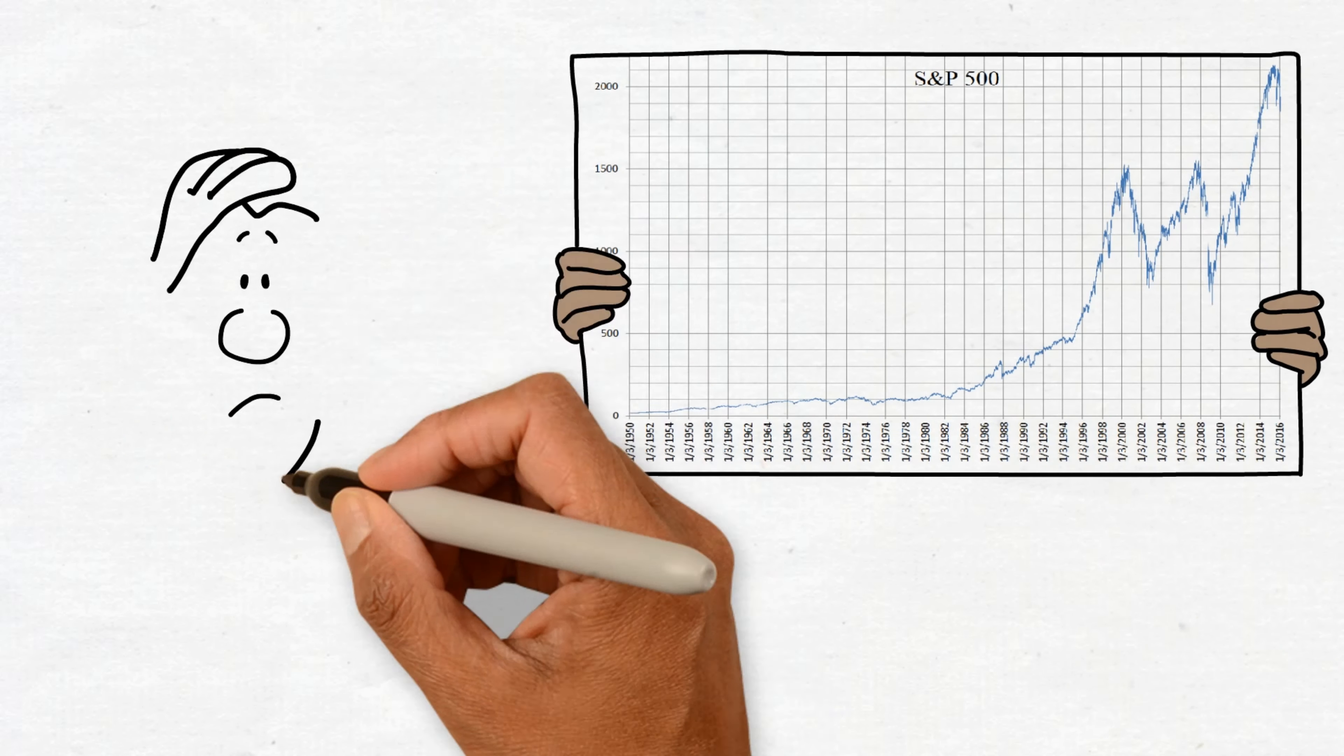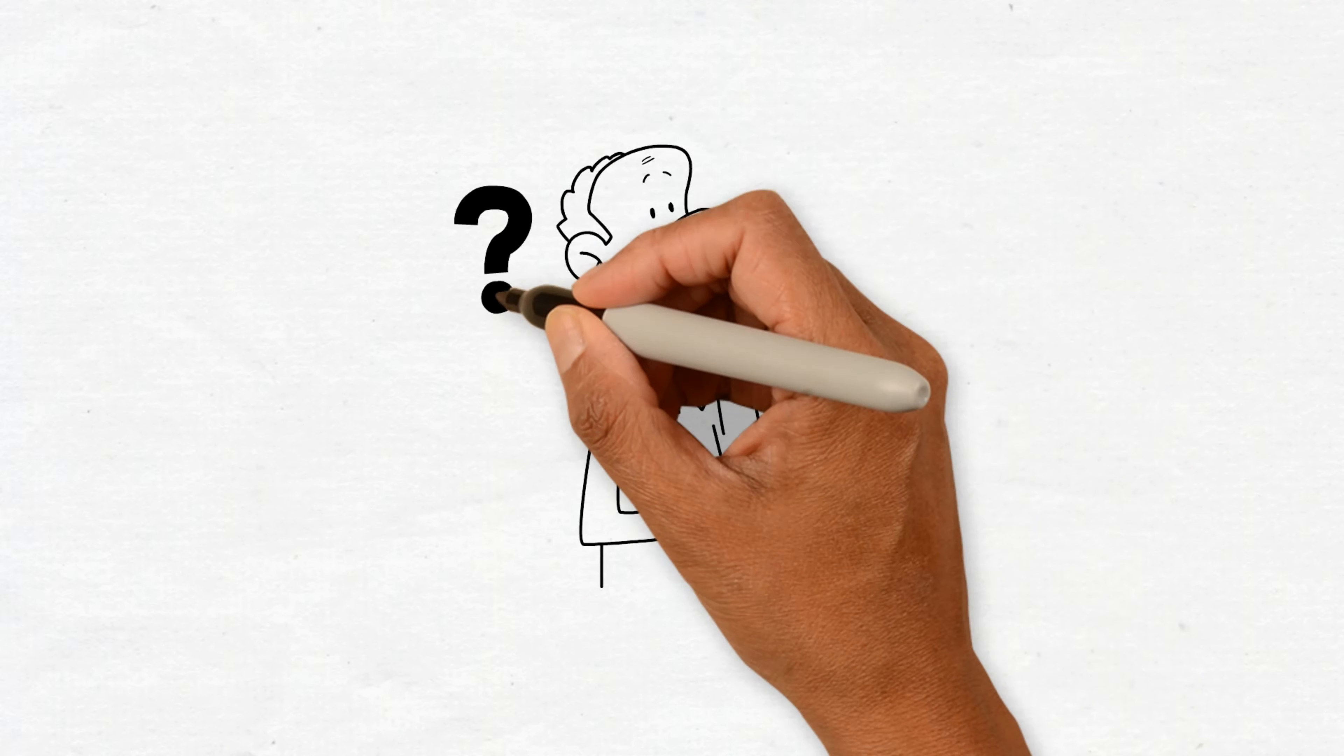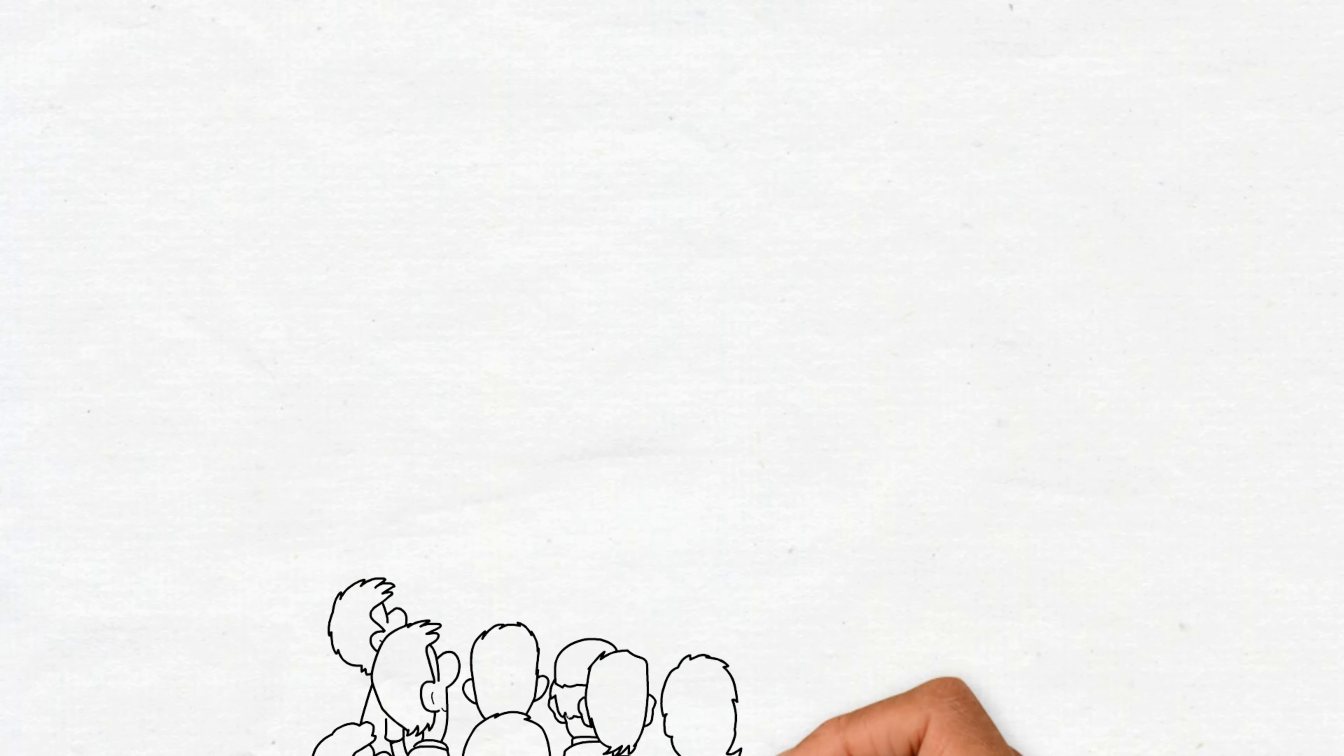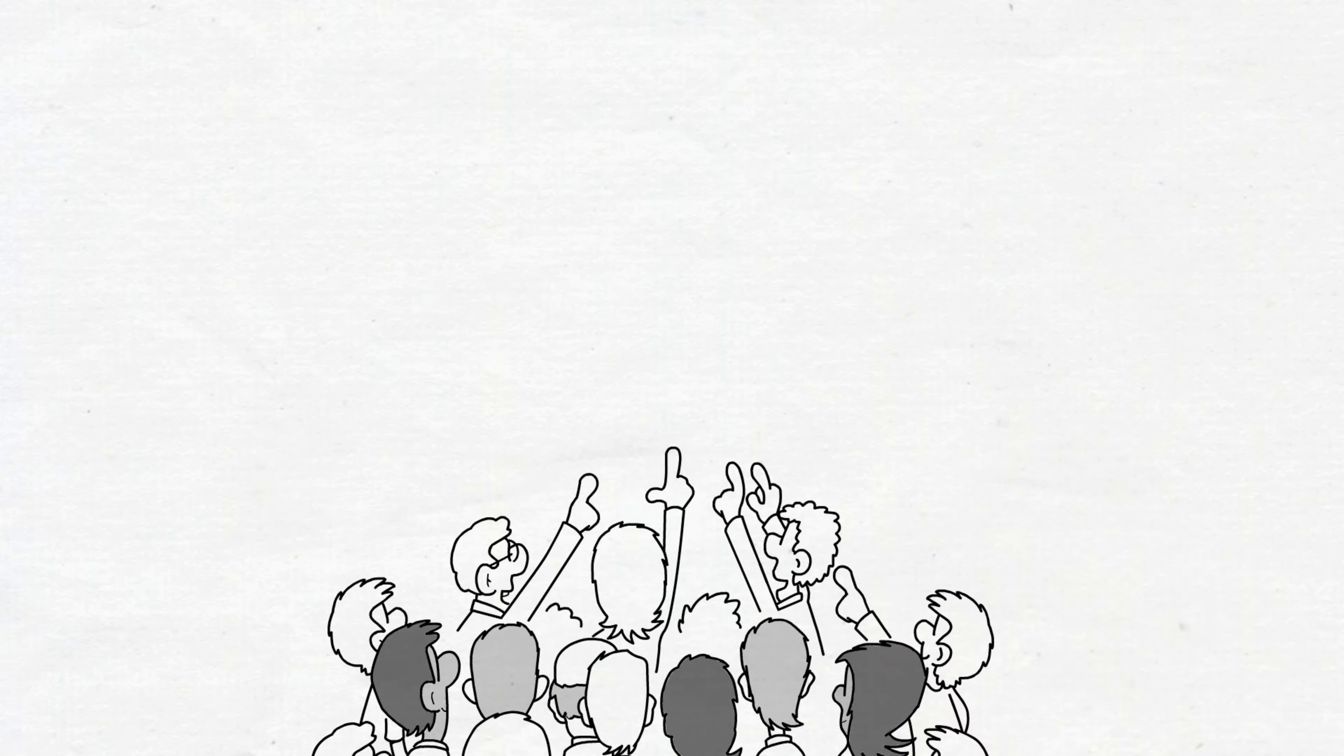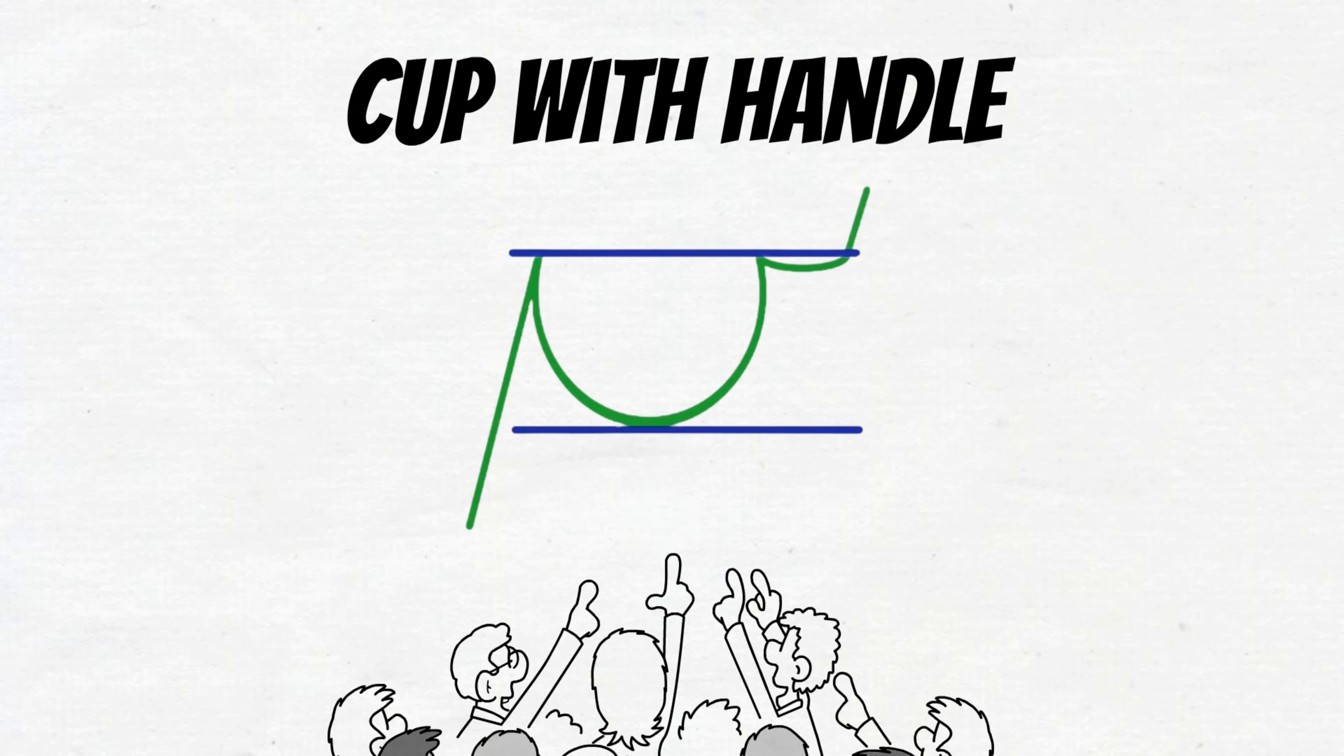Many investors fail to do this, and unless they're spectacularly lucky, they lose money. So, what should you be looking for in stock charts? Quite simply, price patterns. There are many price patterns, but one of the most important to remember looks like a cup with a handle. In fact, that's its name, cup with handle.